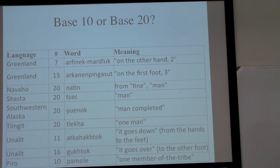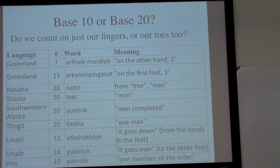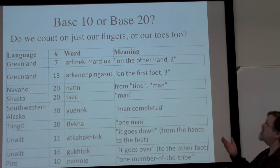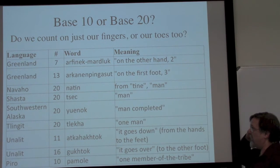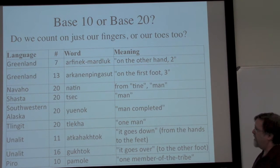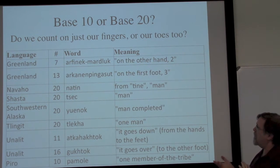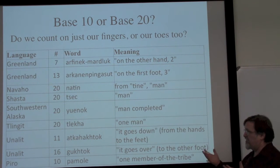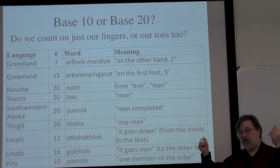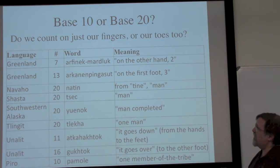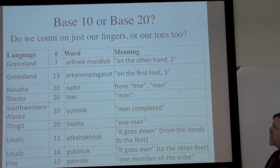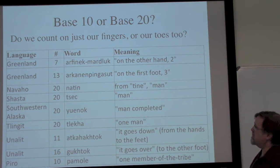Another thing we can tell, when we start to understand what the words are doing, is the fundamental distinction between base ten or base twenty. As I say, there are some other kinds of bases that get involved — fives, eights, and some others. But one of the principal questions is: do you count in tens or do you count in twenties? In other words, are we counting our fingers, or are we counting our fingers and our toes?